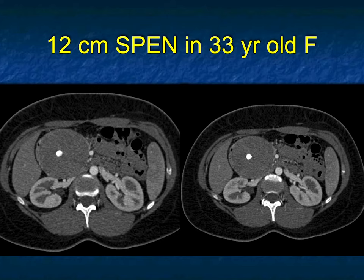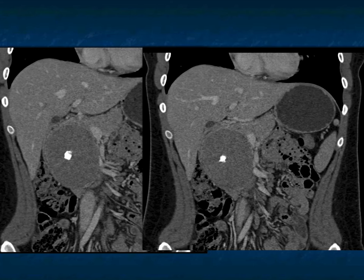SPEN tumors commonly calcify, though the calcification can be peripheral rather than central — central calcification pushes more toward serous cystadenoma. The average age for SPEN tumors is 19 to 30 years old, with a nine-to-one female predominance, though we do see men and also younger patients as young as six or seven, as well as older patients over 50 or 60. It's a diagnosis across a range of ages. Here's the same patient shown in a nicely detailed coronal view.